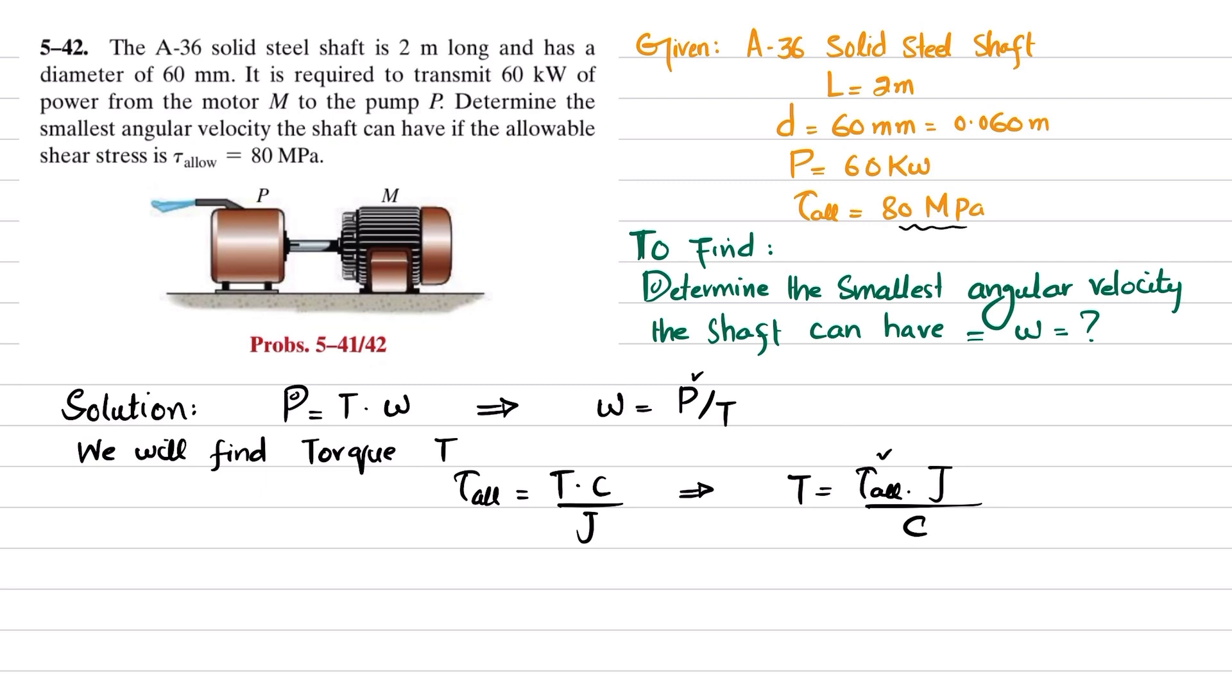c is not given, but the diameter of the shaft is given, so c will be equal to d divided by 2, which is 0.060 divided by 2, and that equals 0.030 meters.